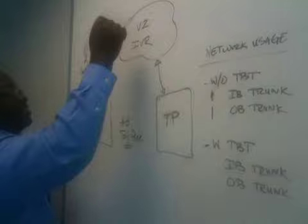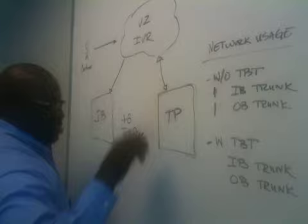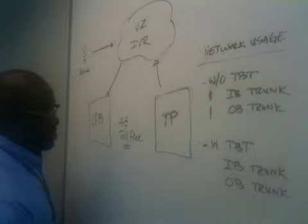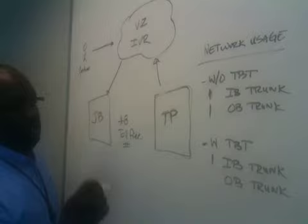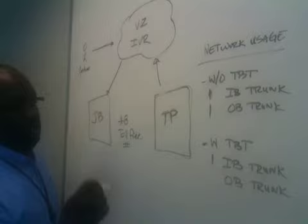Verizon will then transfer the call back over to JetBlue, terminating the call at Teleperformance. You only have one inbound trunk used on the JetBlue side, zero in use at the Teleperformance side. You still have all your capacity there, and that one call is not using multiple lines — it's only using one.